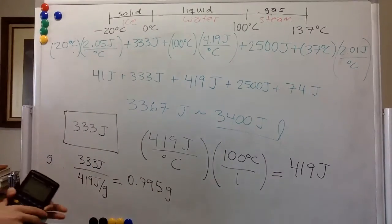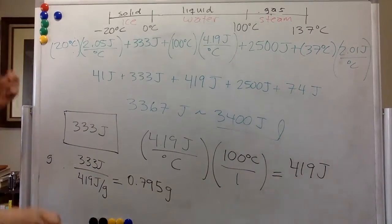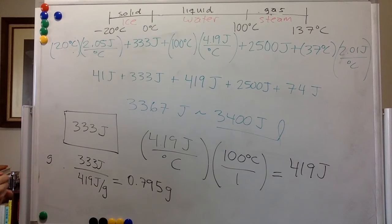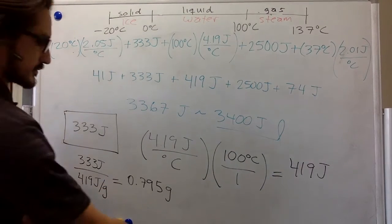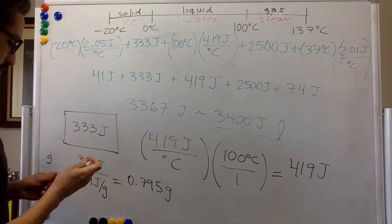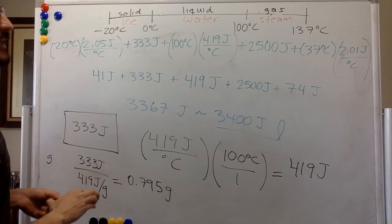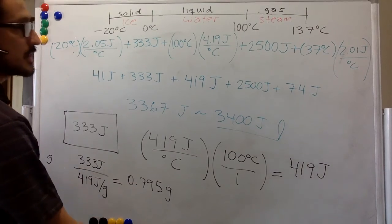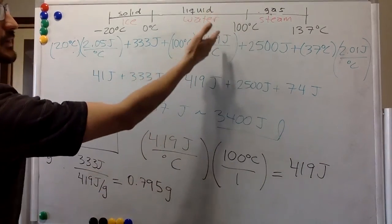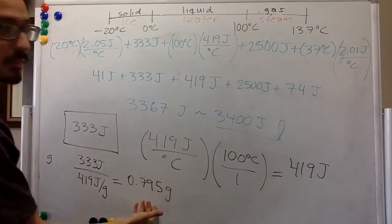So the minimum, very, very minimum amount of water that you need is about 0.8 grams. That is if you start the water at 100 Celsius. If you start it at less than 100, then you're going to need more water.